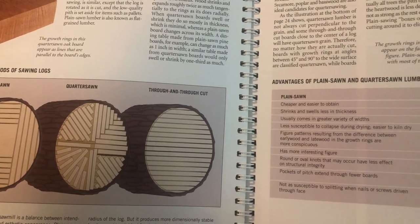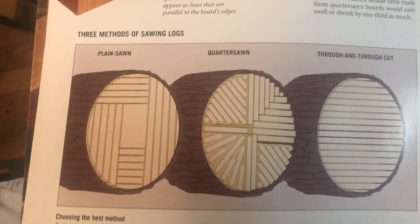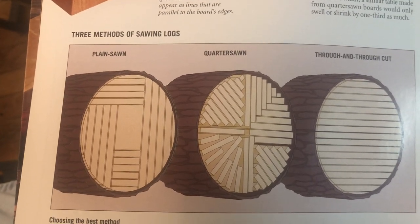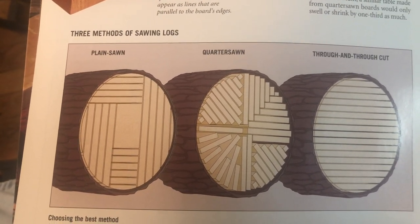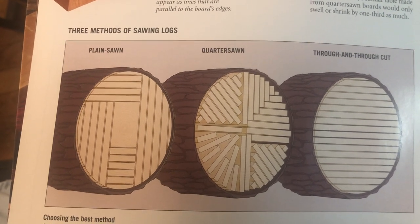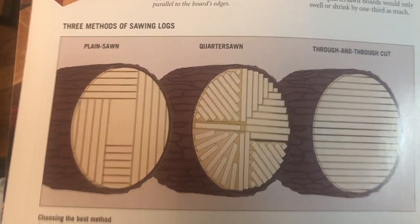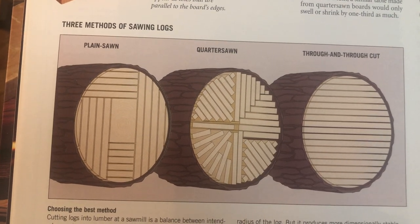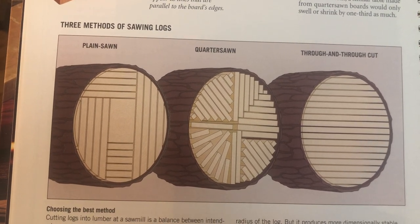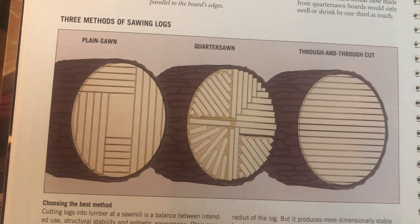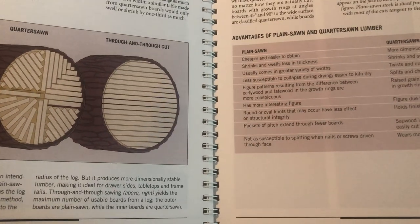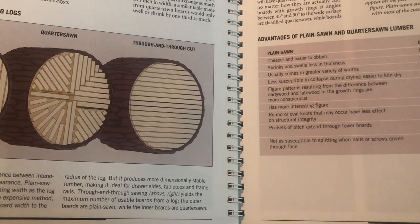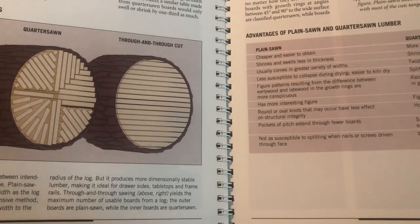Look at this — the different cutting methods. Three methods of sawing logs: the plain saw, the quarter saw, and the through-cut, to make different types of wood. This is interesting — I wonder how they cut that; it seems like you'd get a lot of waste. But they know what they're doing. It's a lot more involved than just buying a sawmill and cutting things down.